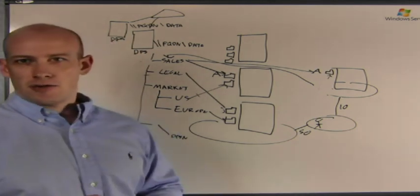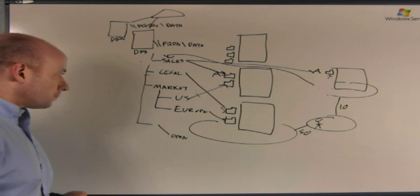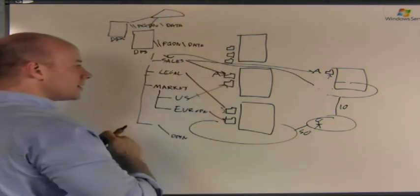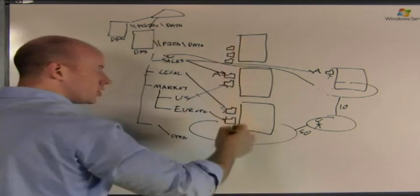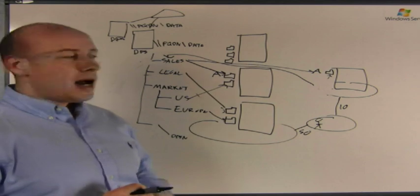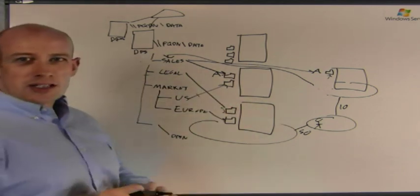And that's really all DFS is doing. I'm creating a logical namespace that has targets to actual shares on file servers, and these can pretty much be any UNC share. The great thing is I'm abstracting out the data from where it's stored.